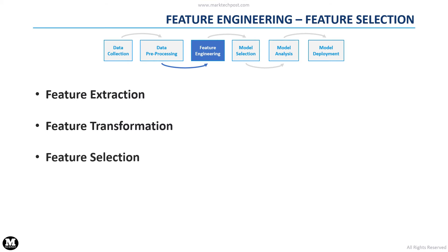Once we have our transformed features, we can select, thanks to proper techniques, the most important features for our problem. This process is used to reduce overfitting and training time, and to increase the accuracy of our machine learning solution. Note that with the feature selection process, we choose the most useful available features. During the feature engineering step, we can also leverage dimensionality reduction methods to reduce the number of features, but in such a case we will create new attributes instead of selecting the most suitable among the available ones.